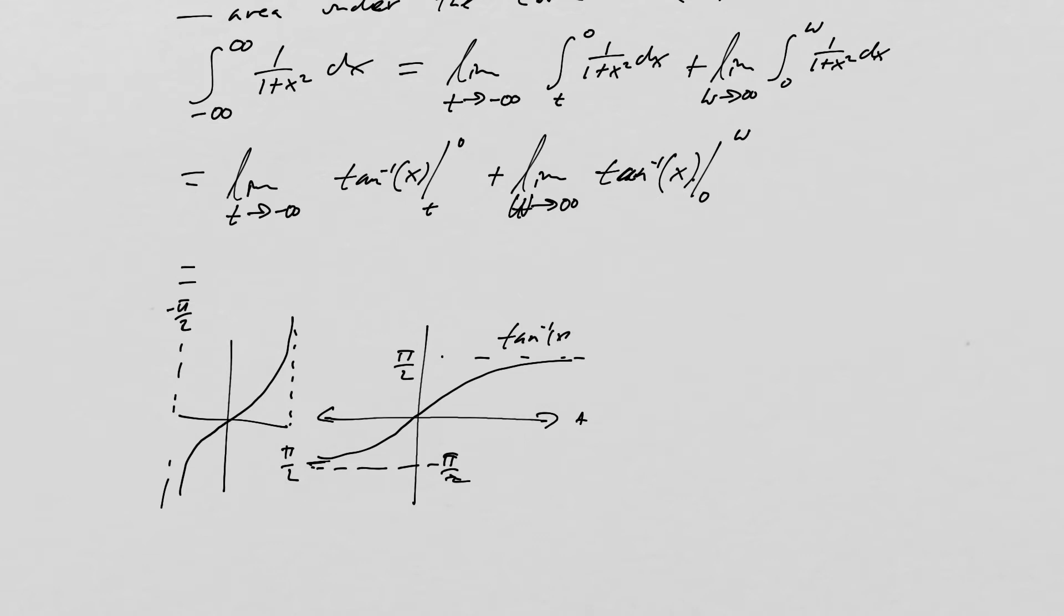Alright, so to put all this together, of course, what I have here is tangent inverse of 0, minus the limit as t goes to negative infinity of tangent inverse of t, plus the limit as w goes to infinity of tangent inverse of w, minus tangent inverse of 0.